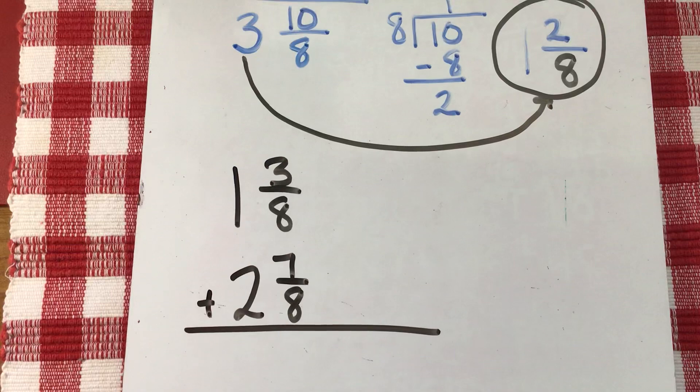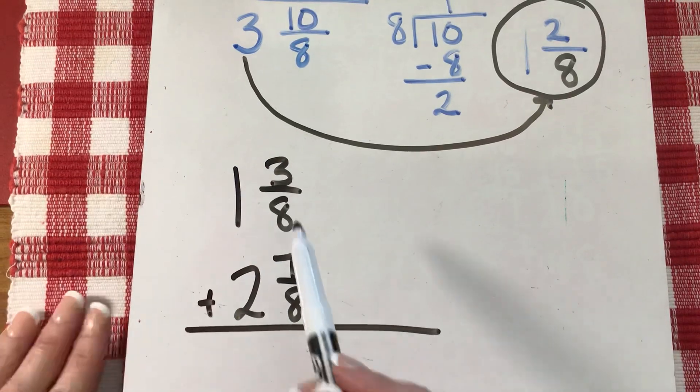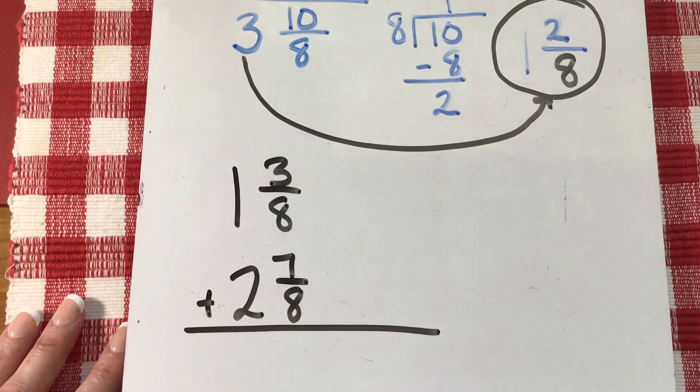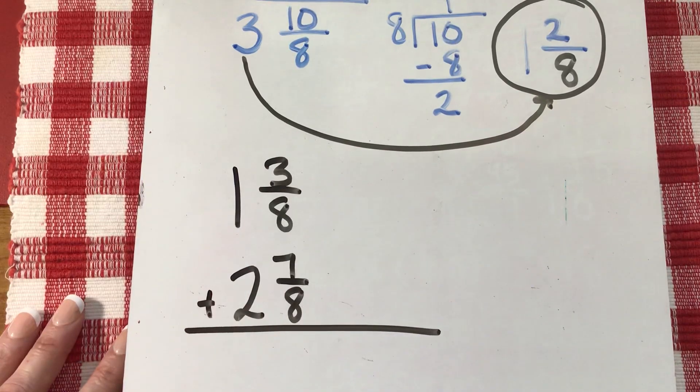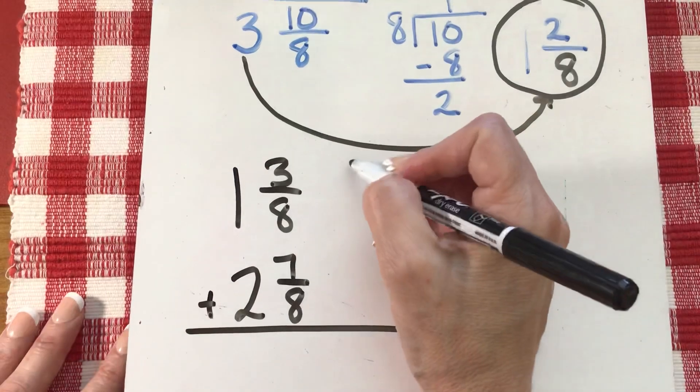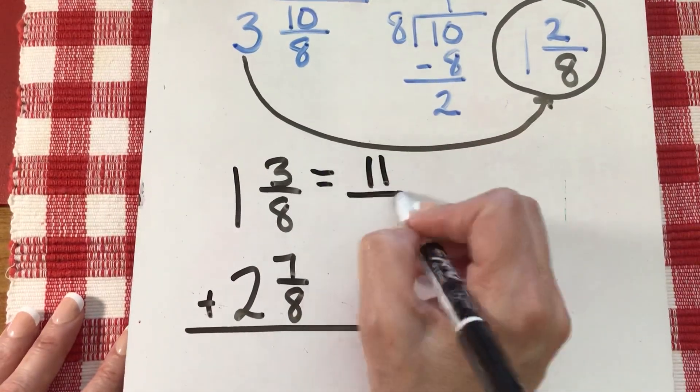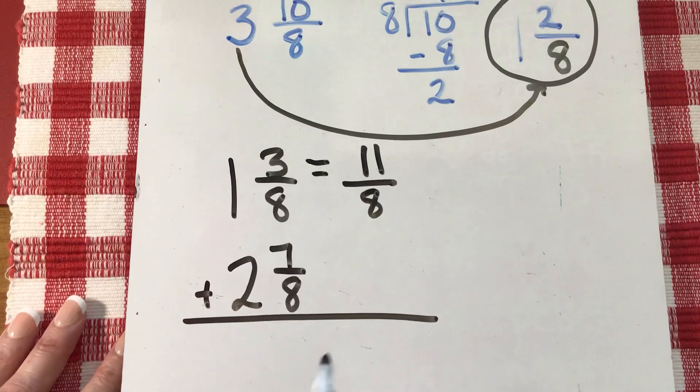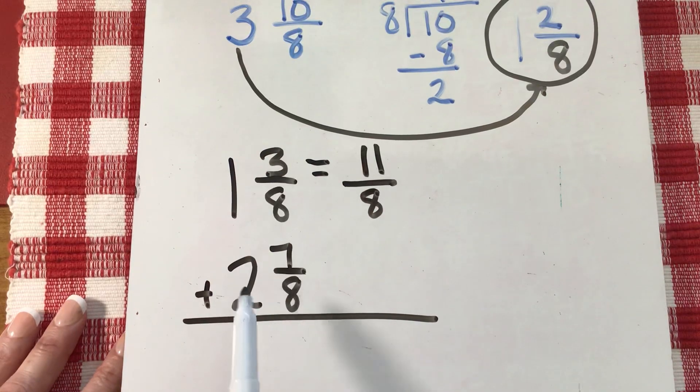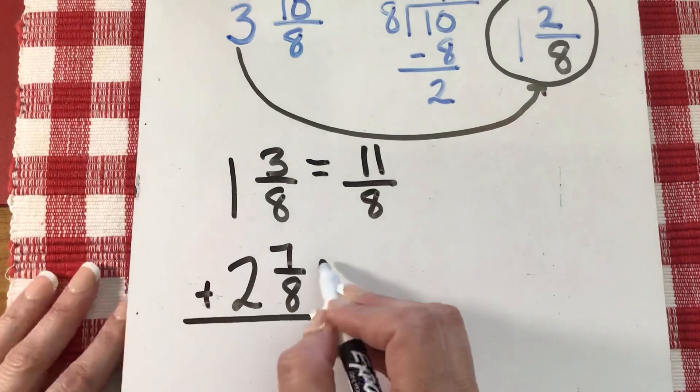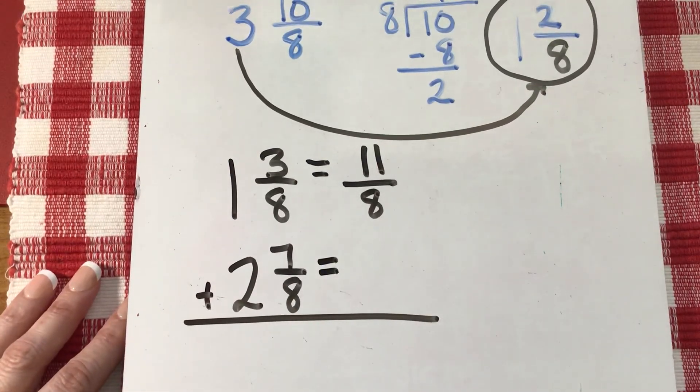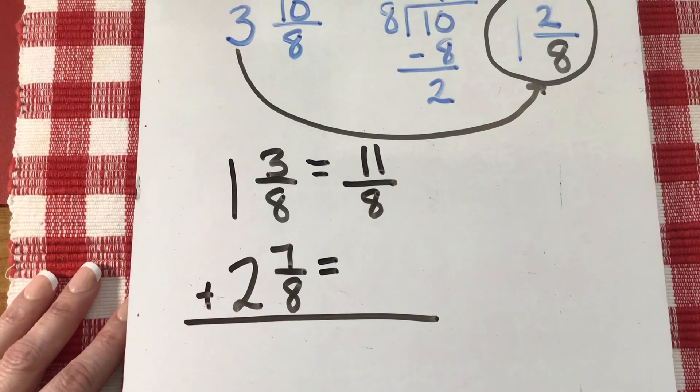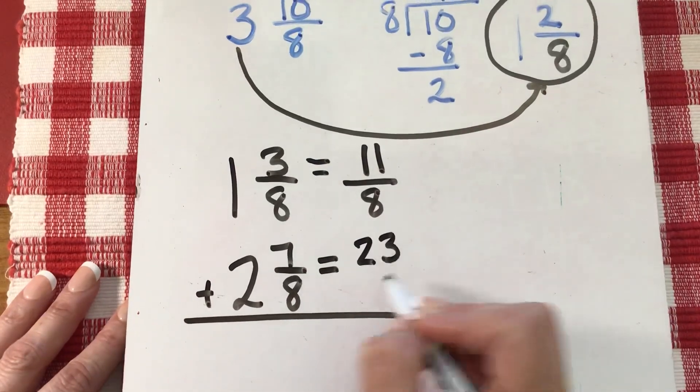Let's review how to change a mixed number to an improper fraction. Take your denominator, multiply it by your whole number, add your numerator. So eight times one is eight, plus three is eleven. So my new fraction is eleven over eight. Denominator stays the same. Let's do the same method. Multiply your denominator by your whole number and then add seven. So eight times two is sixteen, plus seven more, twenty-three over eight.